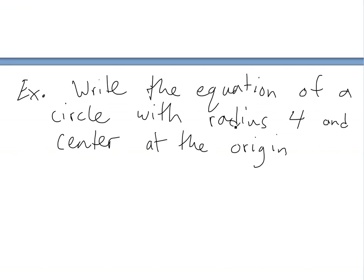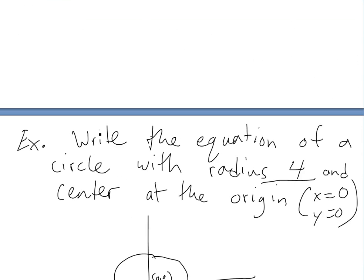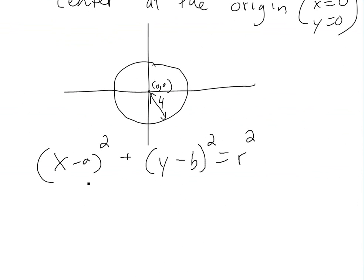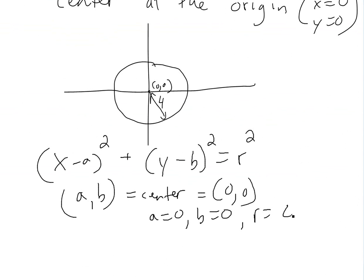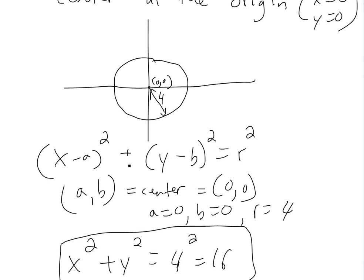Now let's look at an example. Write the equation of a circle with radius 4 centered at the origin, at x equals 0, y equals 0. Looking at the original equation, a equals 0, b equals 0, and r equals 4. So we just write x squared plus y squared equals 4 squared, which is 16. This is our equation of a circle at the origin with radius 4.